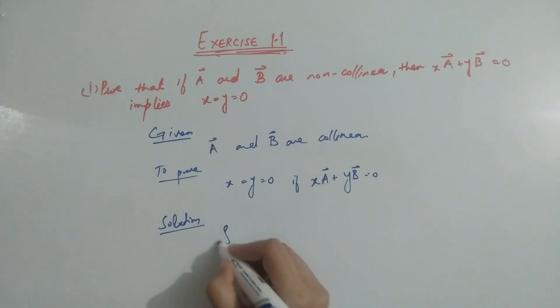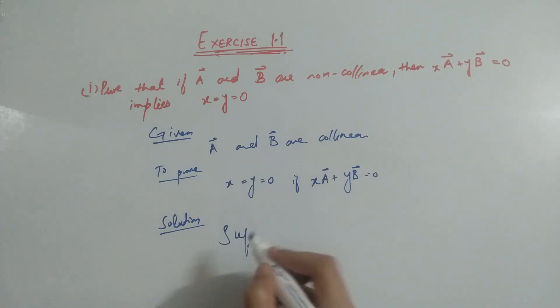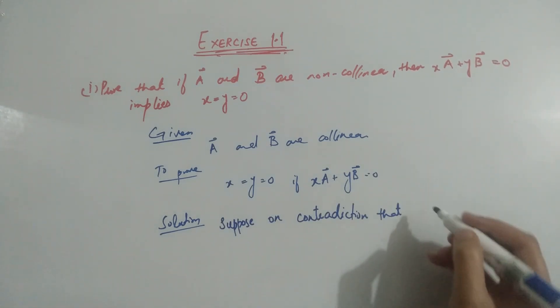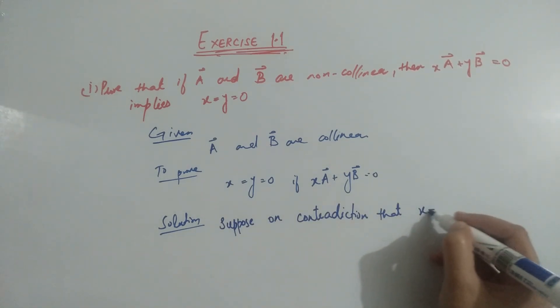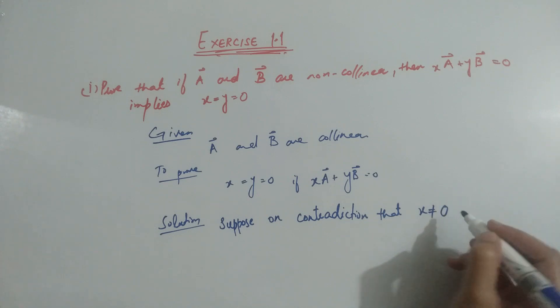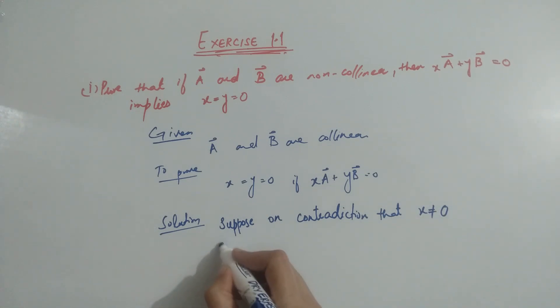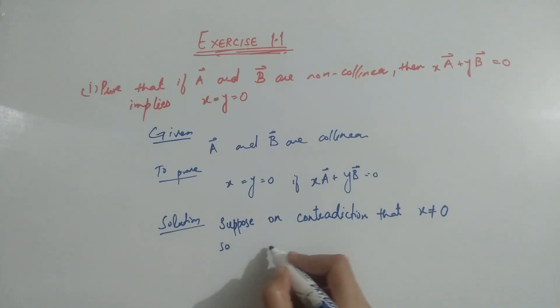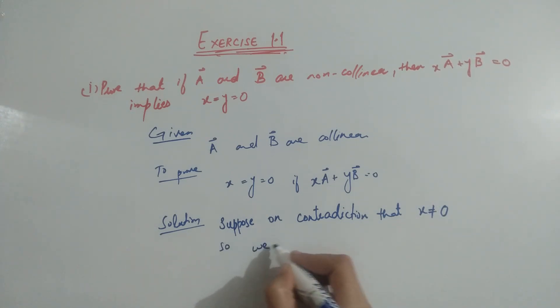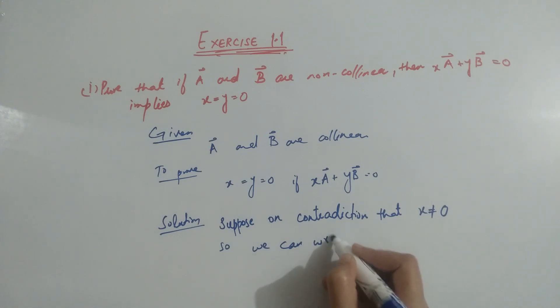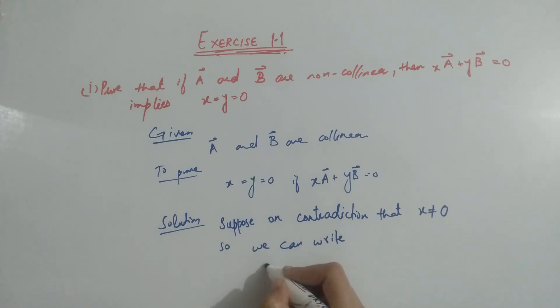Suppose, by contradiction, that x is not equal to 0. So we can write xA.